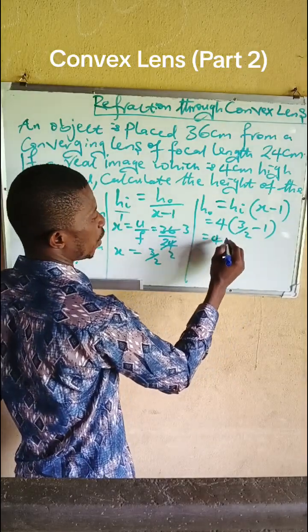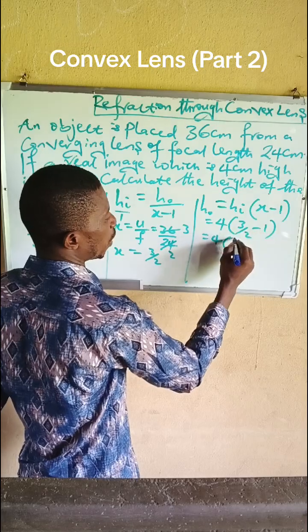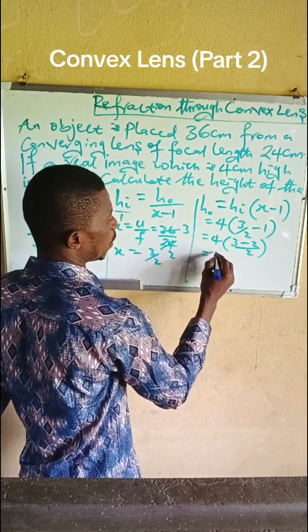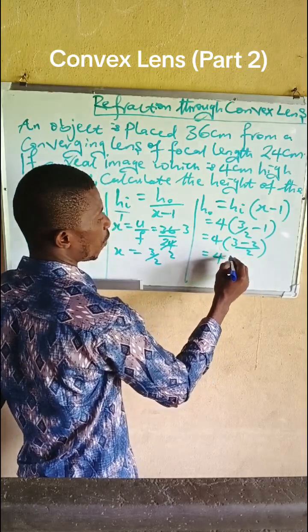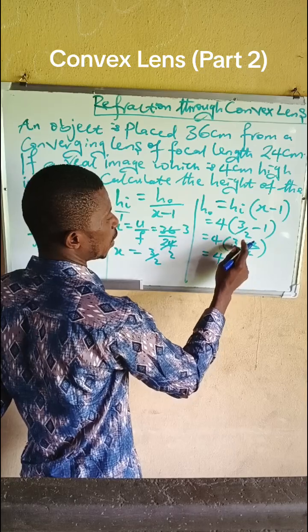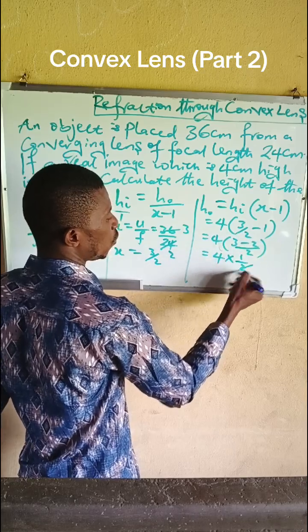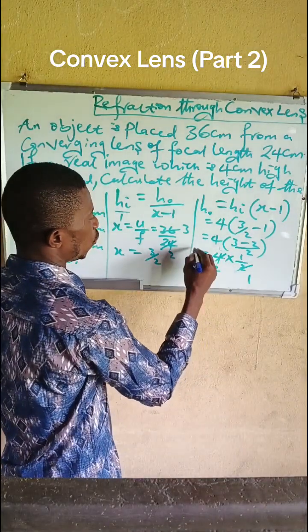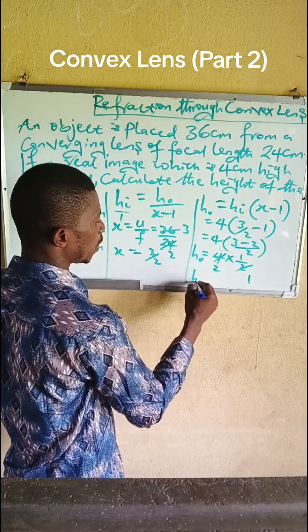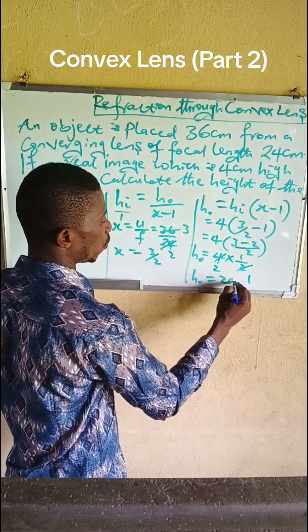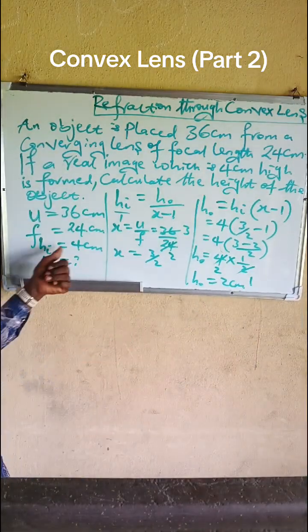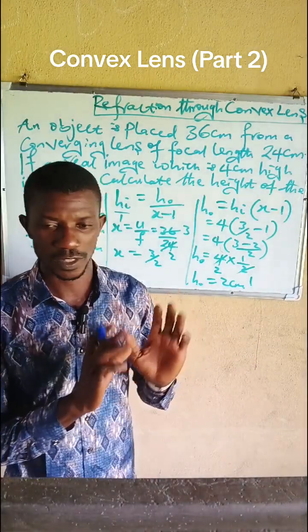This gives us 4 times (3-2)/2, which equals 4 times 1/2. My answer becomes 2cm. So the object height is 2cm and the image height is 4cm. Thank you.